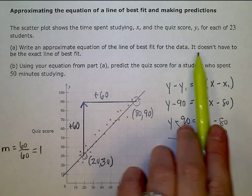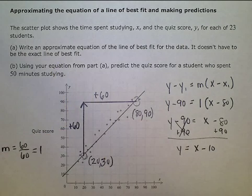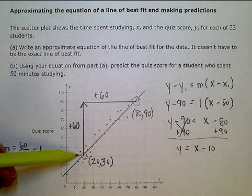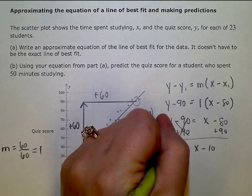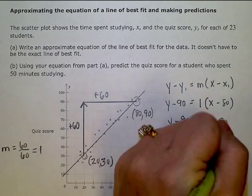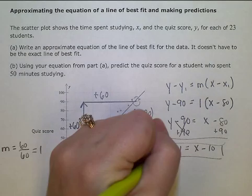We're just trying to make as close of an approximation as we can by hand. So here's my equation of my line of best fit. That's the answer to part A.